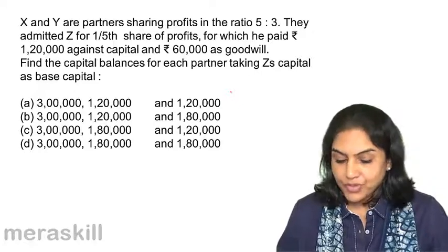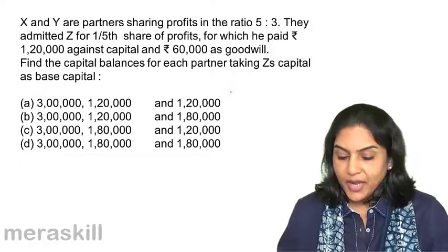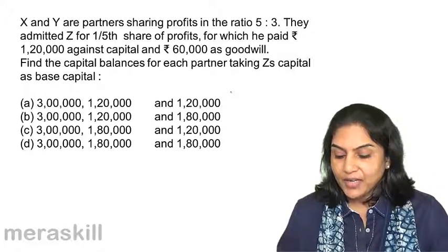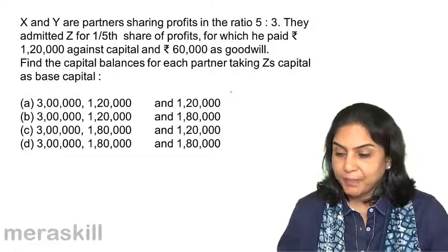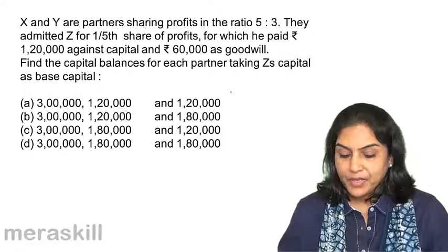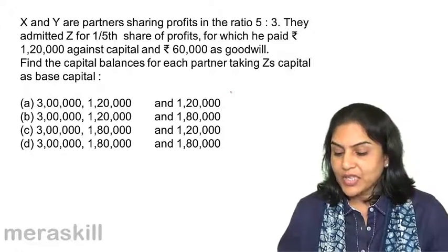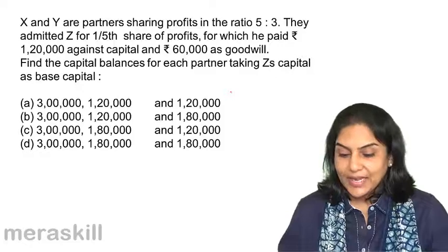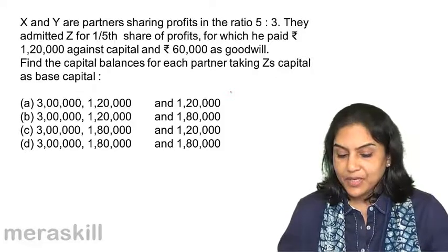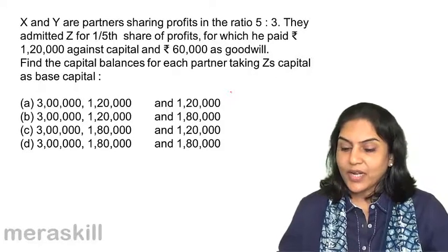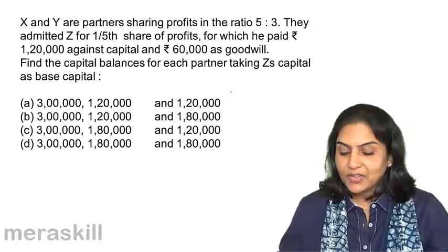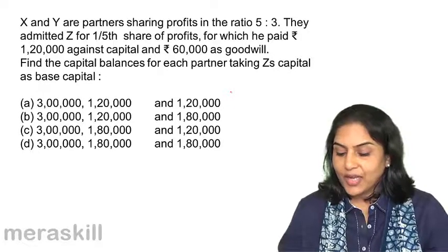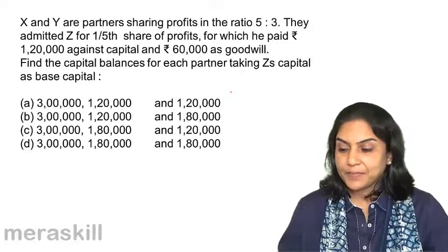What are the options? A. $3,00,000; $1,20,000 and $1,20,000. B. $3,00,000; $1,20,000 and $1,80,000. C. $3,00,000; $1,80,000 and $1,20,000. And D. $3,00,000; $1,80,000 and $1,80,000.